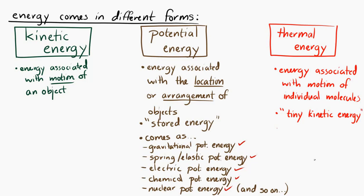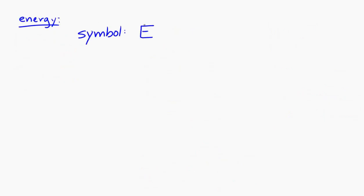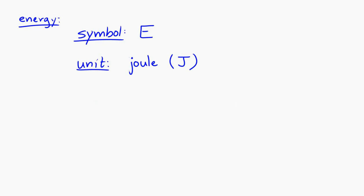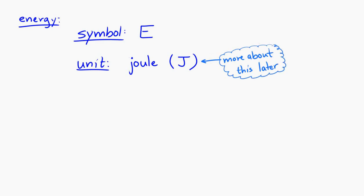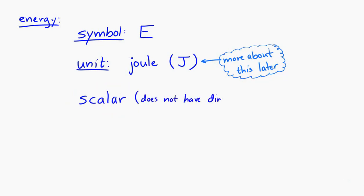Energy is usually represented with a capital letter E — that's the symbol for it. The SI unit of energy is the joule, represented with a capital J. The joule can be related to fundamental SI units like kilograms, meters, and seconds, which we will do in a little bit. Also, energy is a scalar: it does not have direction, it only has magnitude.